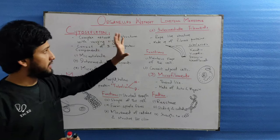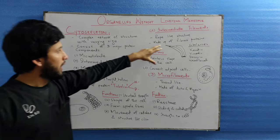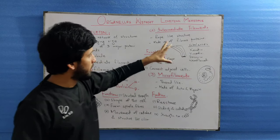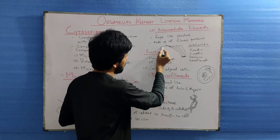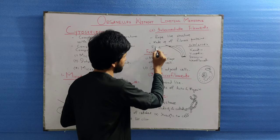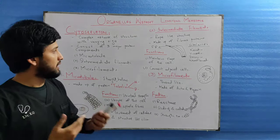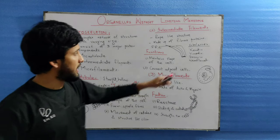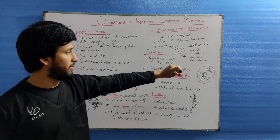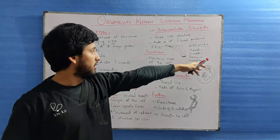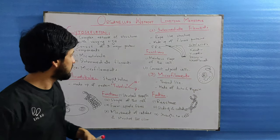The next component is the intermediate filament. Intermediate filament is a rope-like structure made up of fibrous protein. It is further divided into different subclasses: there is keratin, vimentin, desmin, and neurofilaments. Neurofilaments are present in nerve cells, desmin is in muscles, and keratin is found in epithelial cells.